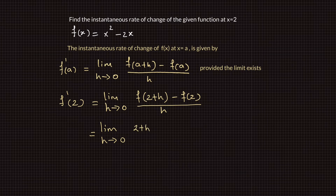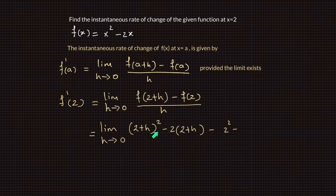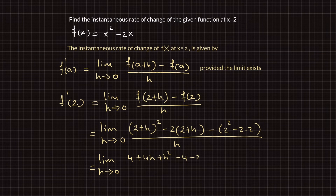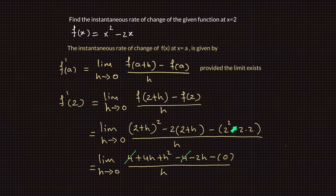f of 2 plus h can be obtained by substituting 2 plus h in place of x in the function, which gives 2 plus h squared minus 2 times 2 plus h. And f of 2 is obtained by plugging 2 into the function f of x, which is 2 squared minus 4. Simplifying this expression and applying the limit as h approaches 0, we have the limit of 4 plus 4h plus h squared minus 4 minus 2h divided by h as h goes to 0.